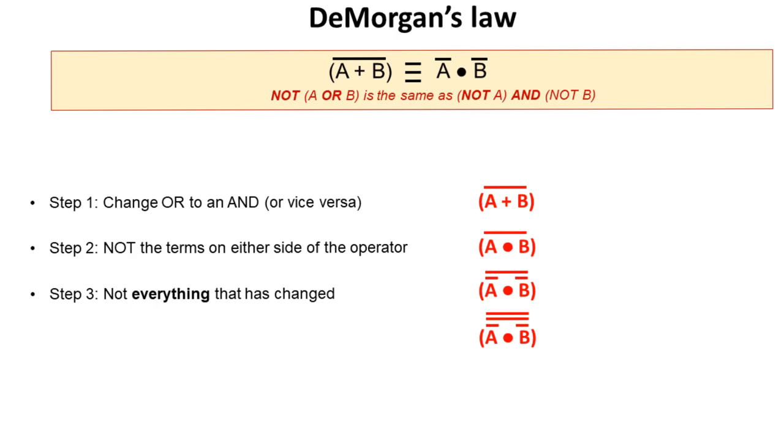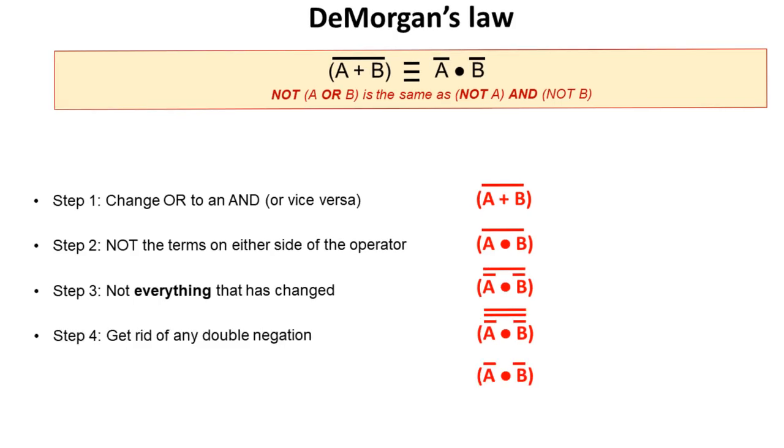Now we NOT everything that's changed. So that's the entire expression. Now at this point you can see we've got quite a lot of what we call double negation. So I can say NOT A or I can say NOT NOT A. Well NOT NOT A is the same as A. They cancel each other out. So we can simplify this now by cancelling out the double negation which we see here. And we end up with this.